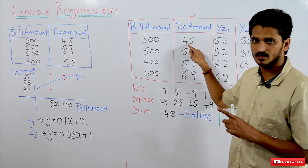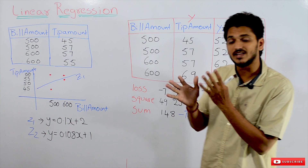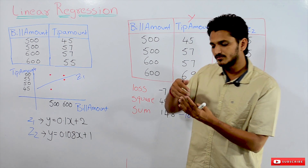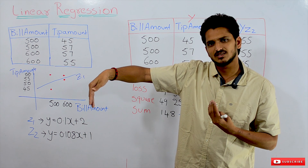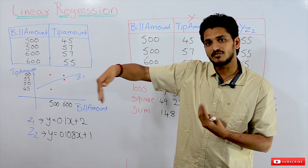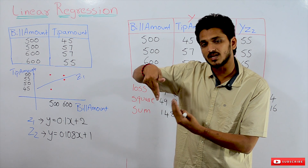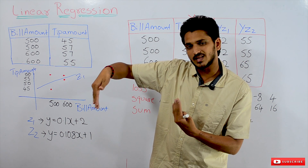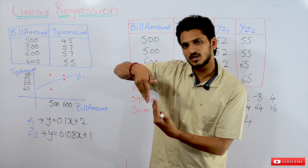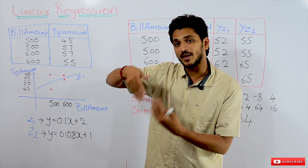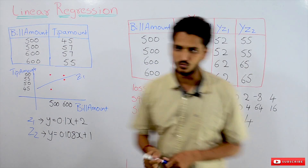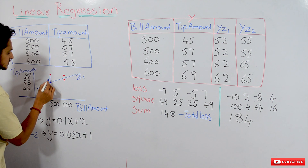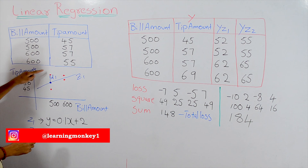The actual tip amount is 45. Z1 predicted 52. The difference between actual and predicted is 7. If the difference between actual and predicted is large, the line is the worst line. If the difference is small, the line is the best line. This difference, for example 45 minus 52, we call it the loss. We have to identify loss for all data points.